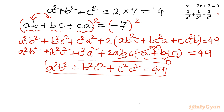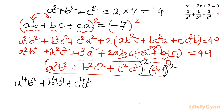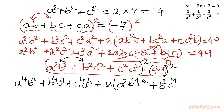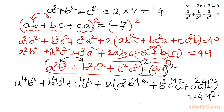Another important result. Now I will square the equation a²b² + b²c² + c²a² = 49. Squaring the left side gives a⁴b⁴ + b⁴c⁴ + c⁴a⁴ + 2(a²b⁴c² + b²c⁴a² + c²a⁴b²). Taking a²b²c² common from the bracket leaves a² + b² + c² inside. So: a⁴b⁴ + b⁴c⁴ + c⁴a⁴ + 2(abc)²(a² + b² + c²) = 49².